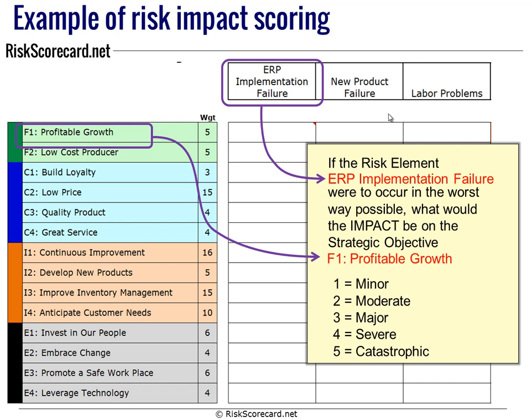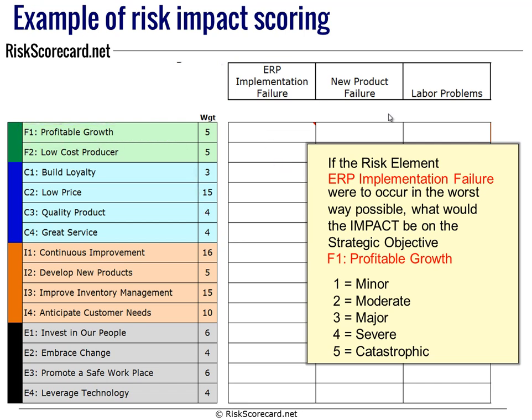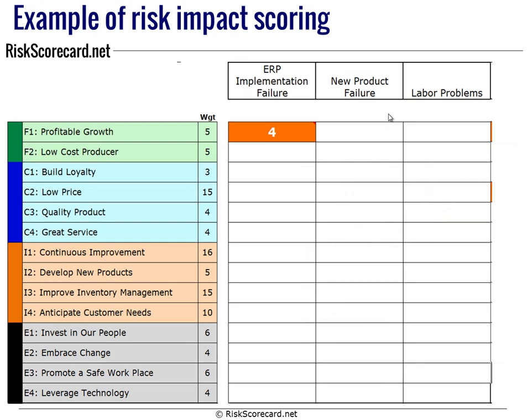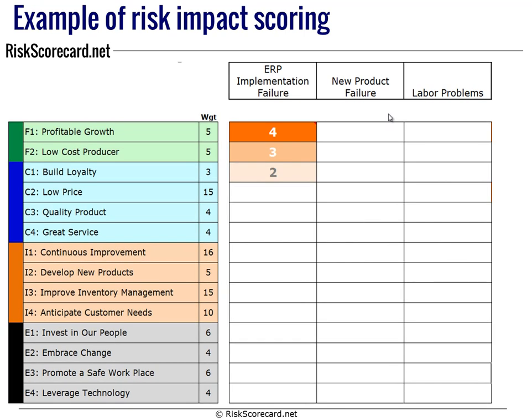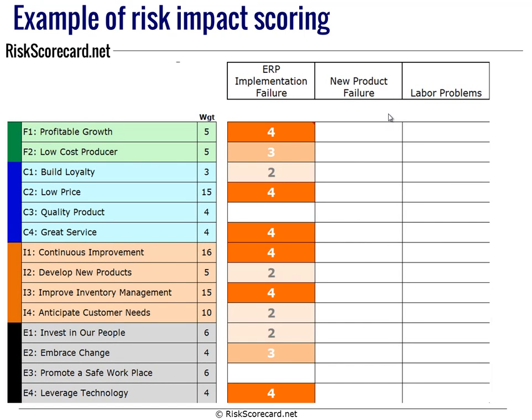We're assessing each risk element against each strategic objective using a standard rating where 1 is minor up to 5 being catastrophic. In this example, let's say we give it a score of 4. Then we ask: what's the impact of the ERP failure on the objective of low-cost producer? Maybe in this case we give it a 3. Maybe ERP failure's impact on brand loyalty is a 2. You go down and rate all of them to begin to get a very precise reading on what the impact of that risk element is against strategy.